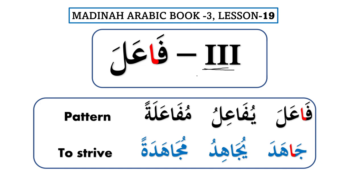We have already completed Form number 2 (فعّل يفعّل) and Form number 4 (أفعل يفعل). These are the most important forms used in the Quran. However, we need to learn all of them to understand the whole Quran. So now we move on to Form number 3, which is فاعل.